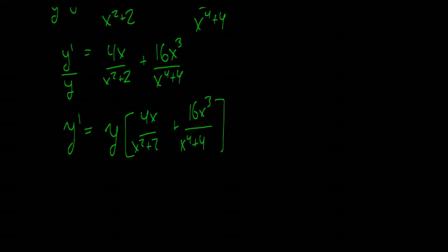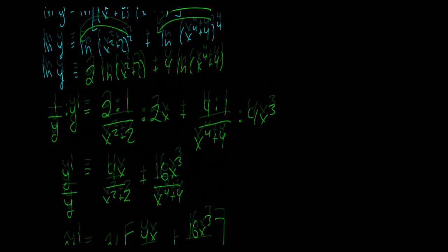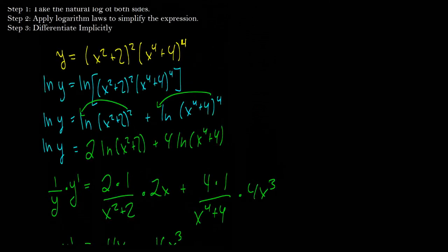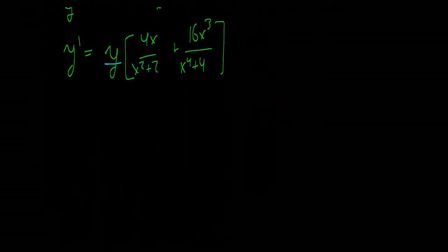So now the question is we have this y here, but what is y? Well, we know what y is because this was our first expression. So y is equal to x squared plus 2 squared times x to the 4 plus 4 to the 4th. So that's a bit of a mouthful.